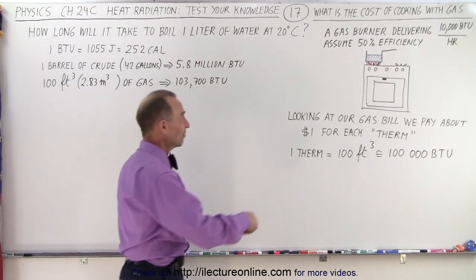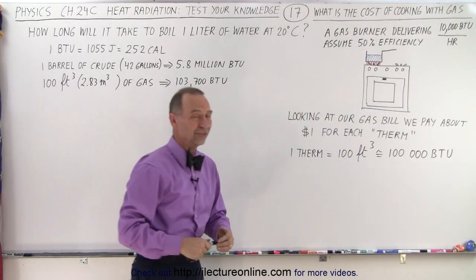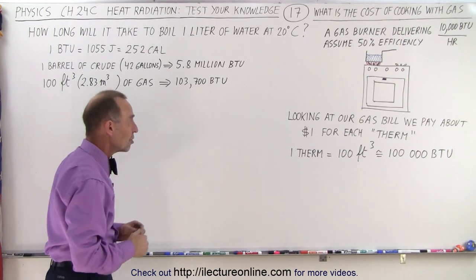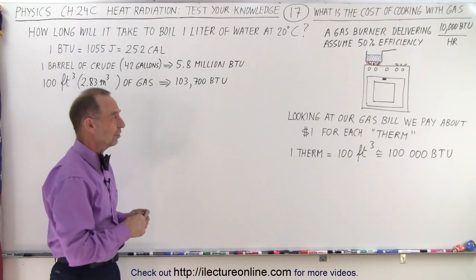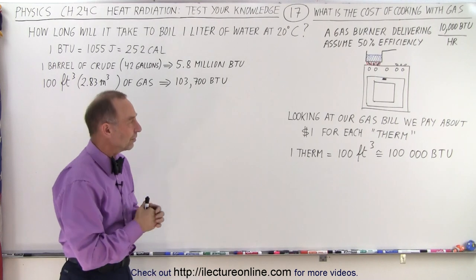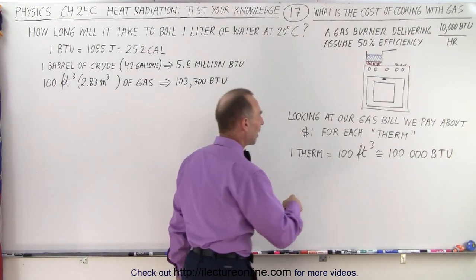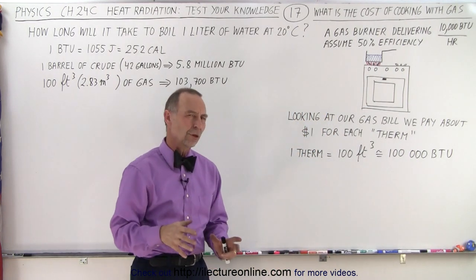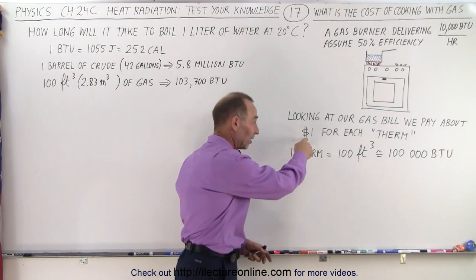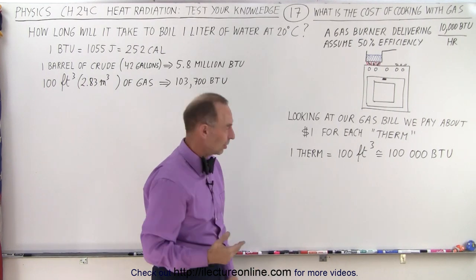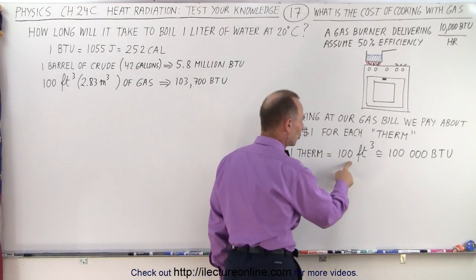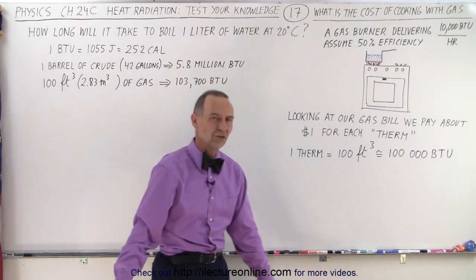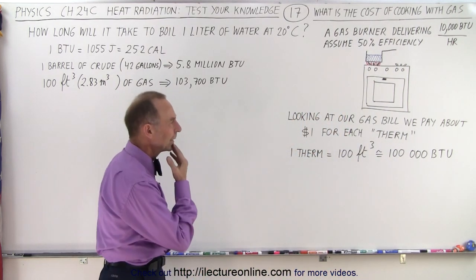We're assuming 50% efficiency, we're using a burner that gives us 10,000 BTUs per hour, we've got the information about the BTUs, but we need a little bit more information. So I took my gas bill from last month, and we're buying what we call therms on the gas bill. I wasn't quite sure what the therm was, but each therm cost about a dollar. And then I went and looked it up, and the therm is about 100 cubic feet, which is equivalent to an energy of 100,000 BTUs. Let's just keep the numbers really simple.